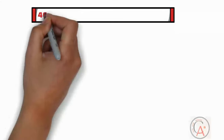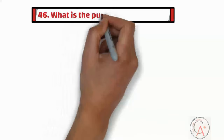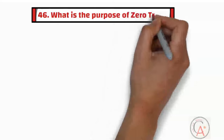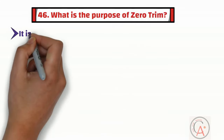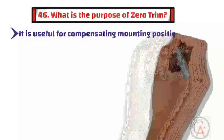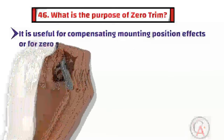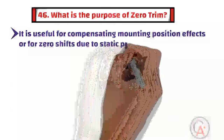The forty-sixth question is: what is the purpose of zero trim? Zero trim is useful for compensating mounting position effects or for zero shifts due to static pressure in DP applications.